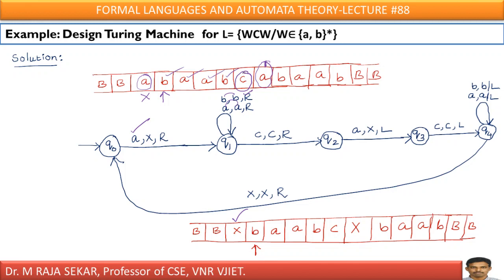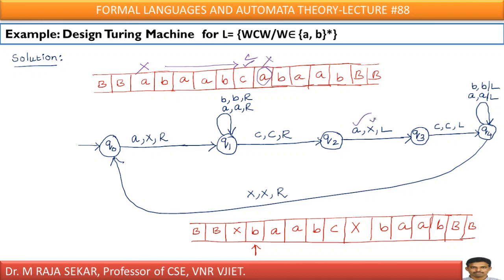Once if I reach C, I must search for the corresponding A. After crossing C, if it is B, replace B by B; if it is A, replace A by A — simply move blindly to the right side. This A is replaced by X and I am moving right, moving right till I reach C. Once the head reads C, this C must be replaced by C, and I must move to the right side. Now, after C, I must search for A. If I get A, that A must be replaced by X. Immediately, I must move to the left side because I have found the corresponding A.